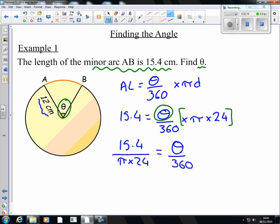Now, we still want to get to that theta. So we need to get rid of that 360. So to get rid of that 360, we're dividing there. So to get rid of that 360, we need to times. So it's going to be 15.4 divided by pi times 24. And we need to times that by 360. And that's going to leave us with the theta that we're interested in.